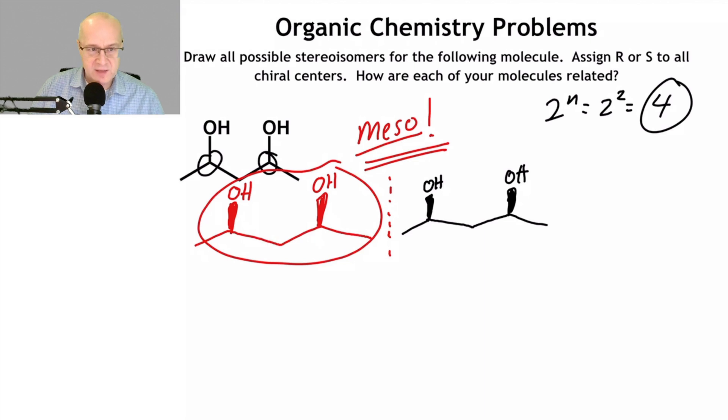It's meso. It has an internal mirror plane right here that reflects this part of the molecule onto that one. So this is actually not chiral. How is it not chiral? Because the mirror image is superimposable, that means you're not chiral. So this is a non-chiral molecule. So this molecule does not have four stereoisomers. It only has three, because this and that are the same thing. This mirror image does not give you an enantiomer.